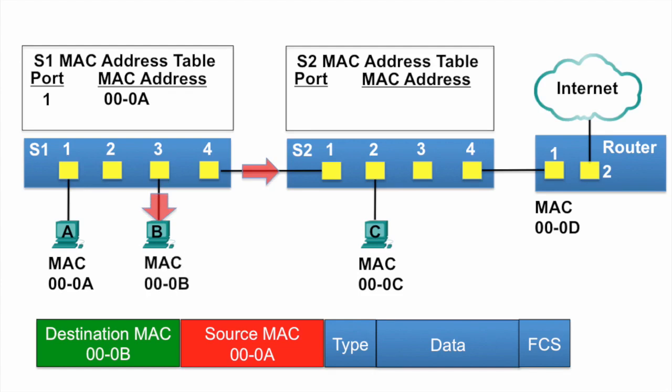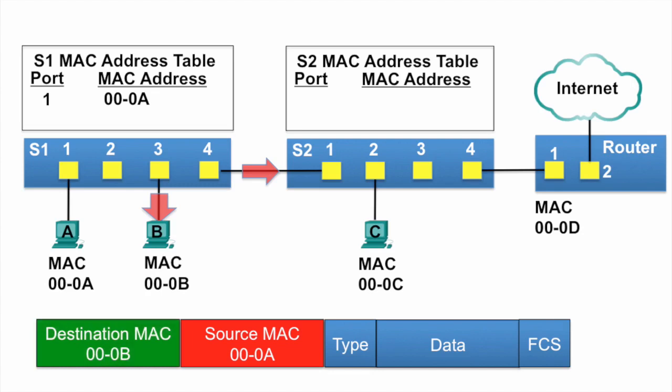PCB receives the Ethernet frame, examines the destination MAC address against its own MAC address, and notices that there is a match, so it receives the rest of the frame. The Ethernet frame continues to be forwarded to switch S2.